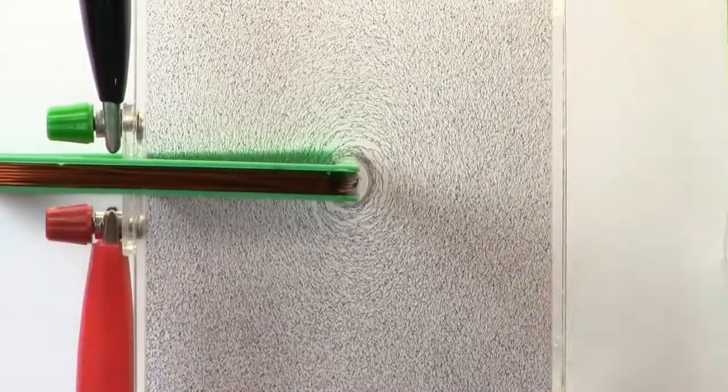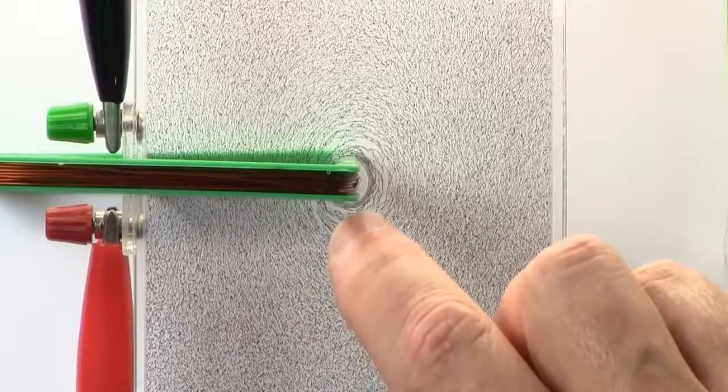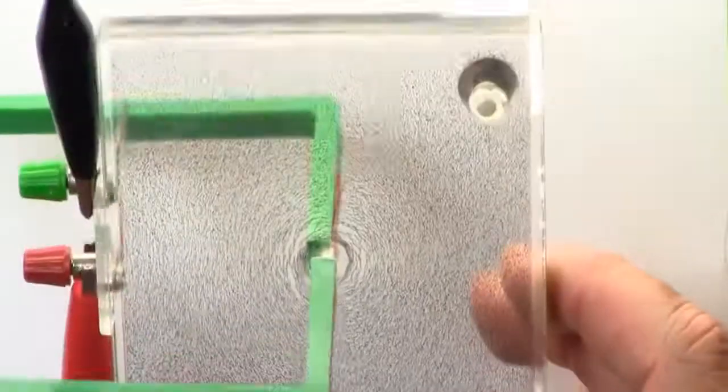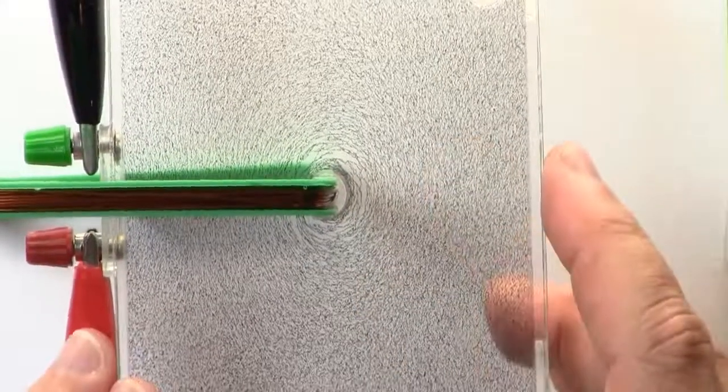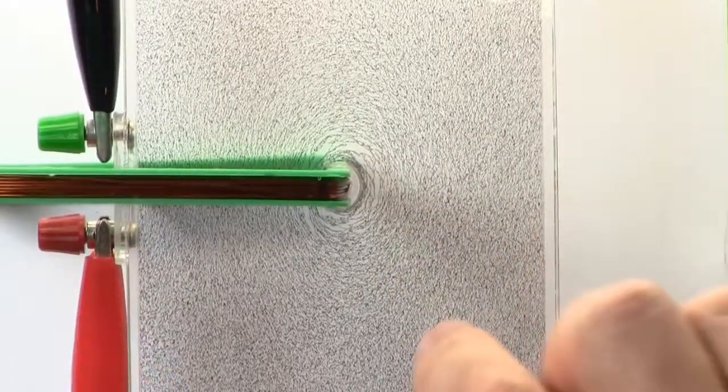So what's this actually indicating? We've got a current flowing down through the acrylic plate, and the iron powder there is going to align with the magnetic field lines.